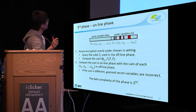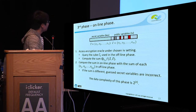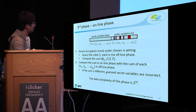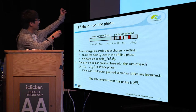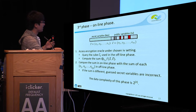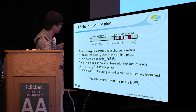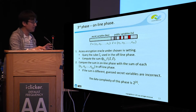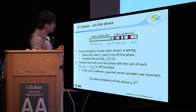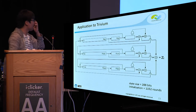Finally, in the online phase, we recover the secret variables in real time. We access the encryption oracle, compute the sum, and compare this sum value with the values from the offline phase table. If the sum values differ, the guessed secret variables are incorrect. The data complexity is 2^|i|.